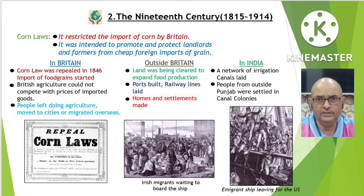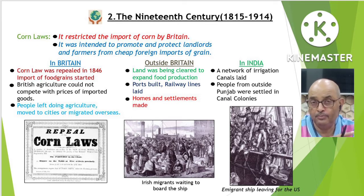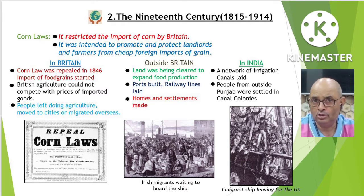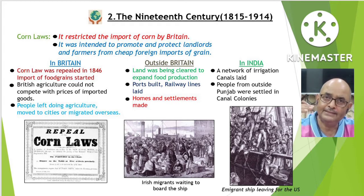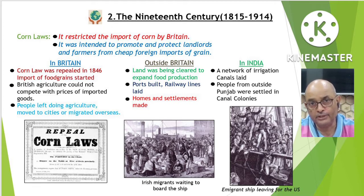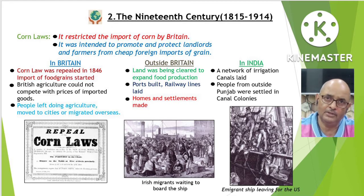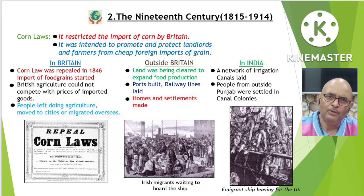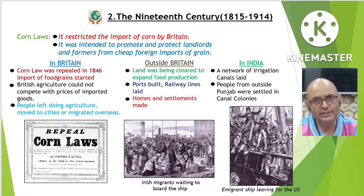The year 1815 indicates that the Corn Laws came into being after the Napoleonic Wars. This law restricted the import of corn, keeping corn prices at a high level. Basically, this law was intended to promote and protect big landlords and farmers from cheap foreign imports of grain. This blockade of grains led to increased profits for homeland farmers.